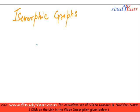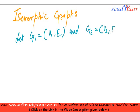Let us define an isomorphic graph. Let G1, which is like this, V1, E1, and G2, which is like this, V2, E2, be two graphs.